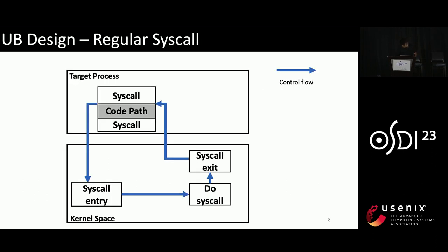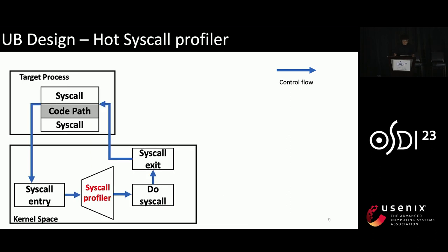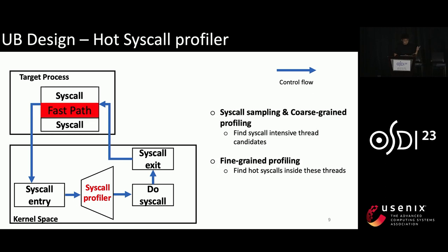This diagram shows how a regular syscall works: execution traps into kernel, does some functionality, then returns to user space. The second syscall is invoked similarly. We hook our first component after the syscall entry function to detect which syscall is hot. If a syscall is hot, the code path between two syscalls is called the fast path. This component uses three main steps: the first two find which threads contain hot syscalls, and the final step identifies hot syscalls inside those threads.